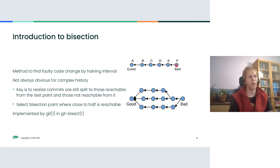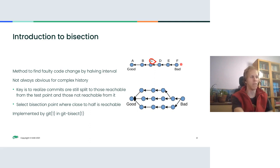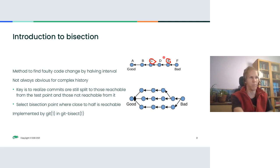You can obviously test every revision, but that's slow. There is a faster way — roughly logarithmic number of steps — by bisecting the interval of commits. For example, you start by testing commit C. If it's good, you know the problem is somewhere in D, E, or F. You then test E; if it's bad, the problematic commit is either D or E. You test D — if it's bad, D is the first bad commit; if it's good, then E was the first bad commit.